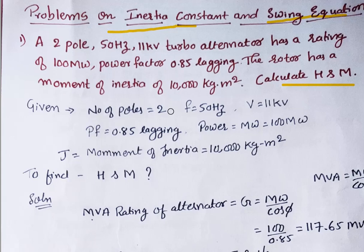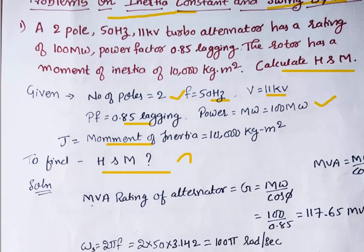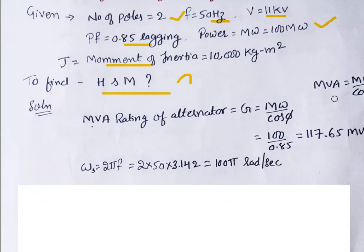Given: number of poles = 2, frequency = 50 Hz, voltage = 11 kV, power factor = 0.85 lagging, power = 100 MW, and moment of inertia J = 10,000 kg·m². To find H and M, we use the basic equation MVA = MW / cos φ, where G is the 3-phase MVA rating of the alternator.